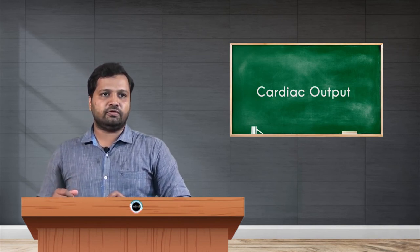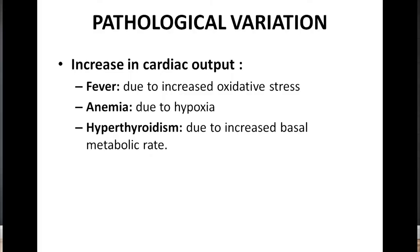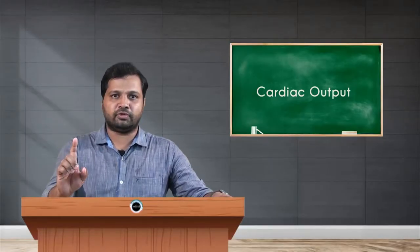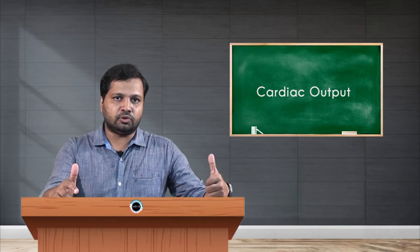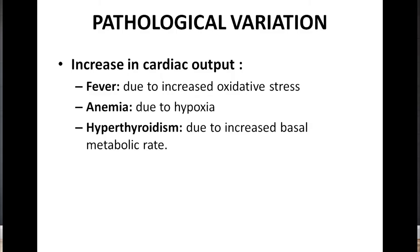Now we move to pathological variations. Conditions that increase cardiac output include: fever, due to increased oxidative stress; anemia, due to hypoxia from decreased oxygen supply to the tissue, causing compensatory increase in cardiac output; and hyperthyroidism, due to increased basal metabolic activity.